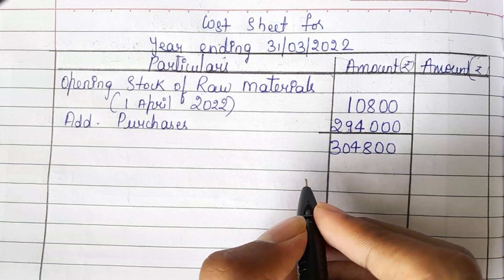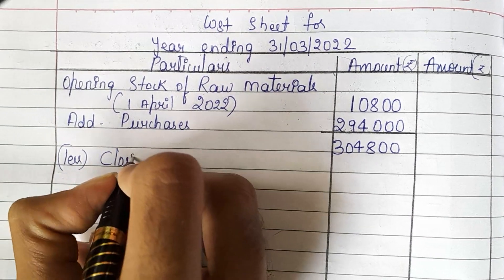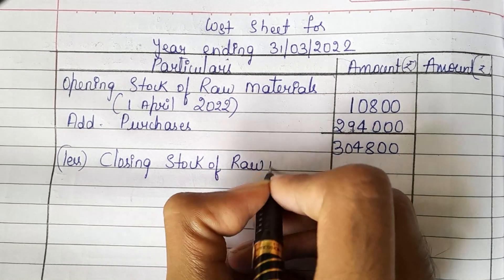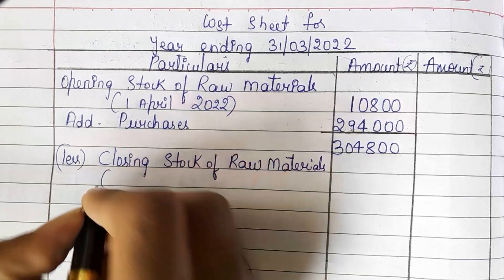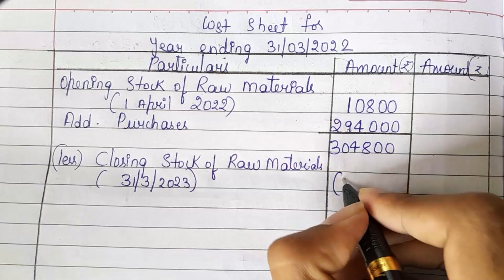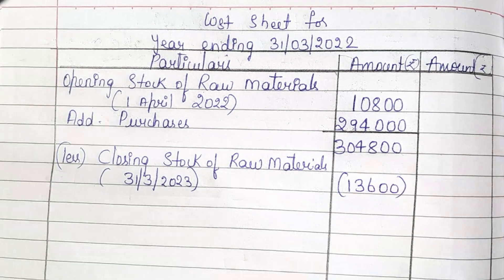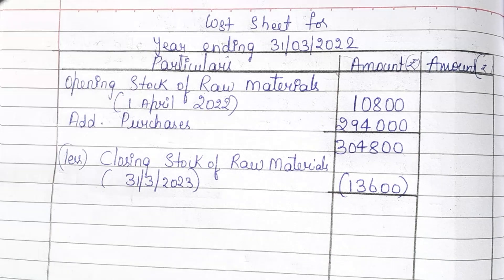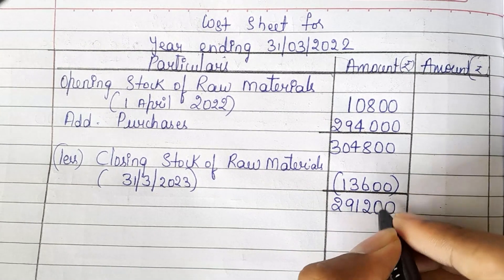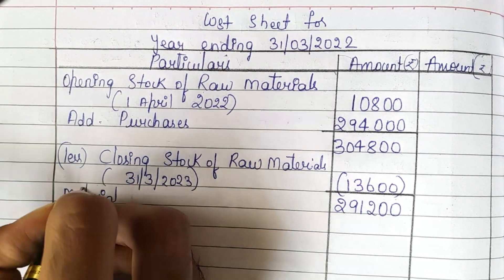Now for this, we need to deduct the closing stock of raw materials as on 31st March 2023. Closing stock of raw materials is 13,600. So 3,04,800 minus 13,600. This is nothing but our material consumed.